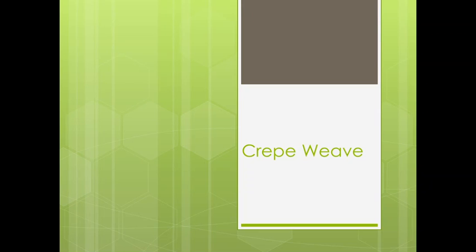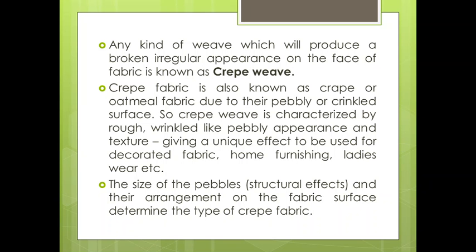Today I am going to talk about crepe weave. Crepe weave is one of the categories used for decorative fabrics. If we define crepe weave, we can say any kind of weave which will produce a broken, irregular appearance on the face of the fabric is known as crepe weave. The phrase 'broken irregular appearance' is very important here.